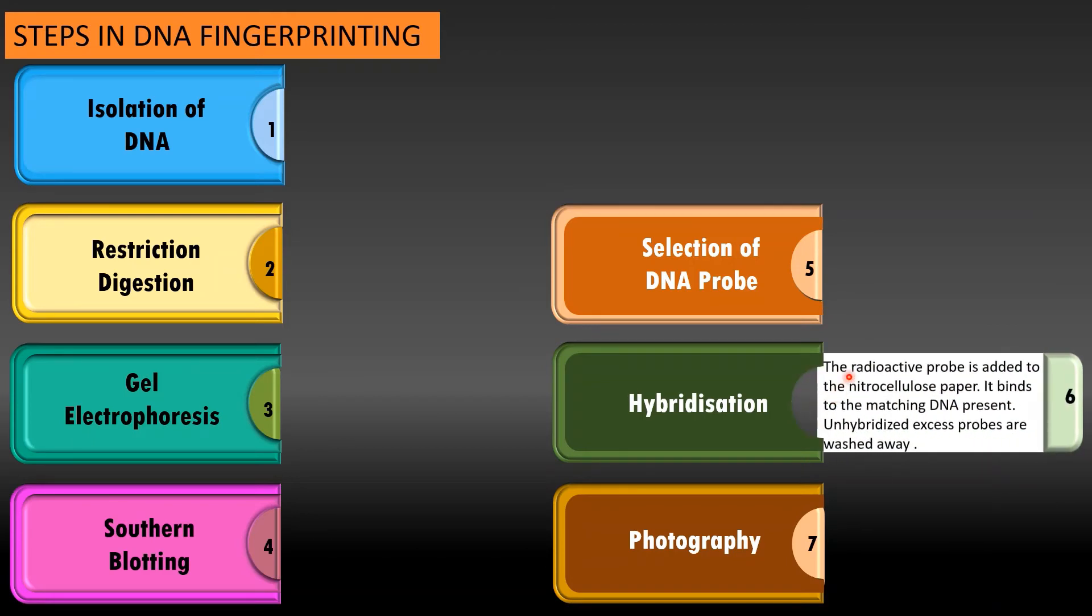Now this probe is added to the nylon membrane. So what will happen, this probe will join to the DNA which we have isolated in the first step, that process called as hybridization. Now any DNA which is not hybridized can be removed by using the washing method.